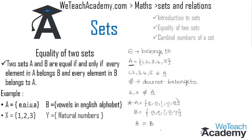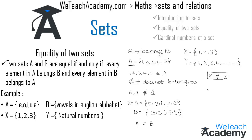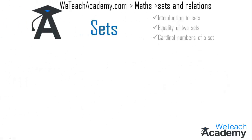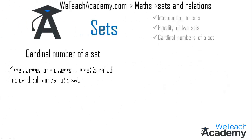For the second example: set X = {1, 2, 3} and Y is the set of natural numbers. The set of natural numbers is {1, 2, 3, 4, ...} and so on. We observe that set X is not equal to set Y, as the elements of Y do not all belong to set X.